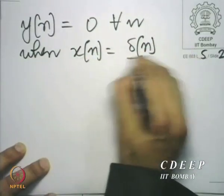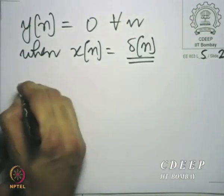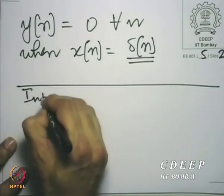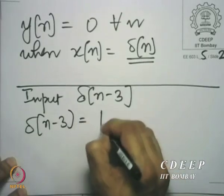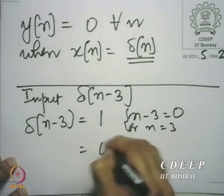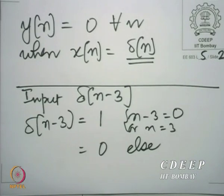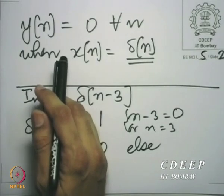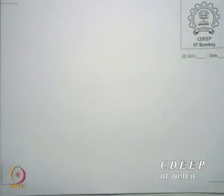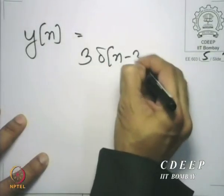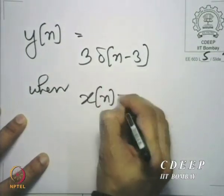The unit impulse sequence is going to be very useful in future. Now, what happens when we give the input δ[n−3]? δ[n−3] equals 1 when n=3 and 0 elsewhere. The output at n=3 gets multiplied by 3, so y[n] = 3·δ[n−3] when x[n] = δ[n−3]. In general, y[n] = N·δ[n−N] whenever x[n] = δ[n−N], for any integer N.